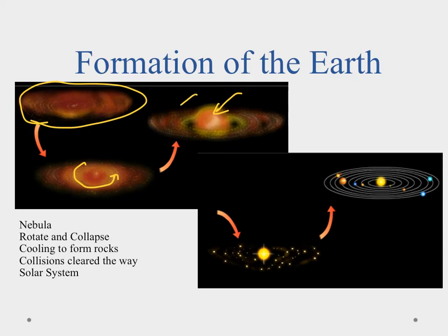We also had this disk of residual matter that was cooling. As it cooled, it allowed rocks and solid substances to form. Those solid substances started to collide with one another and form larger substances, and ultimately those collisions cleared the pathway for our planets and the other objects of our solar system.